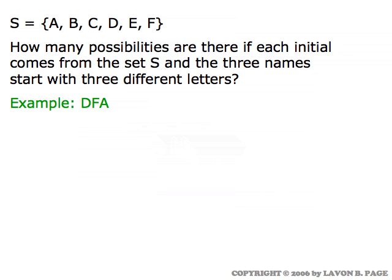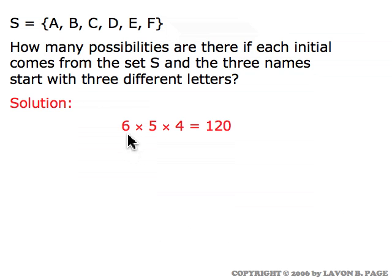How many possibilities are there if each initial comes from the set S and the three names start with three different letters? In that case, the first name could begin with any of the six, the middle name could begin with any of the five remaining letters after the first one was chosen, and the last name could begin with any of the four letters not used by the first or middle name. Six times five times four is one hundred twenty. This is in effect a permutations question — permutations of six objects choosing three.